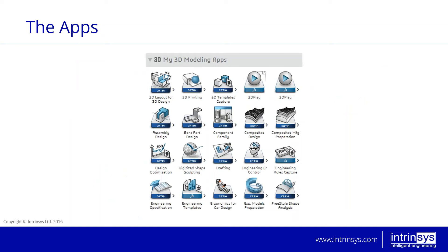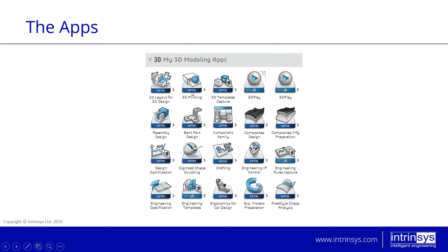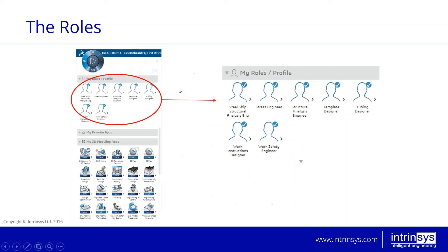The roles effectively determine the access you have to the platform and which type of applications you can use. From the roles, we go to the applications. If you click on any of these roles, you'll see the applications available within those roles. Each one has a tick on its side indicating the role is active. You can activate or deactivate roles to see fewer or more applications.